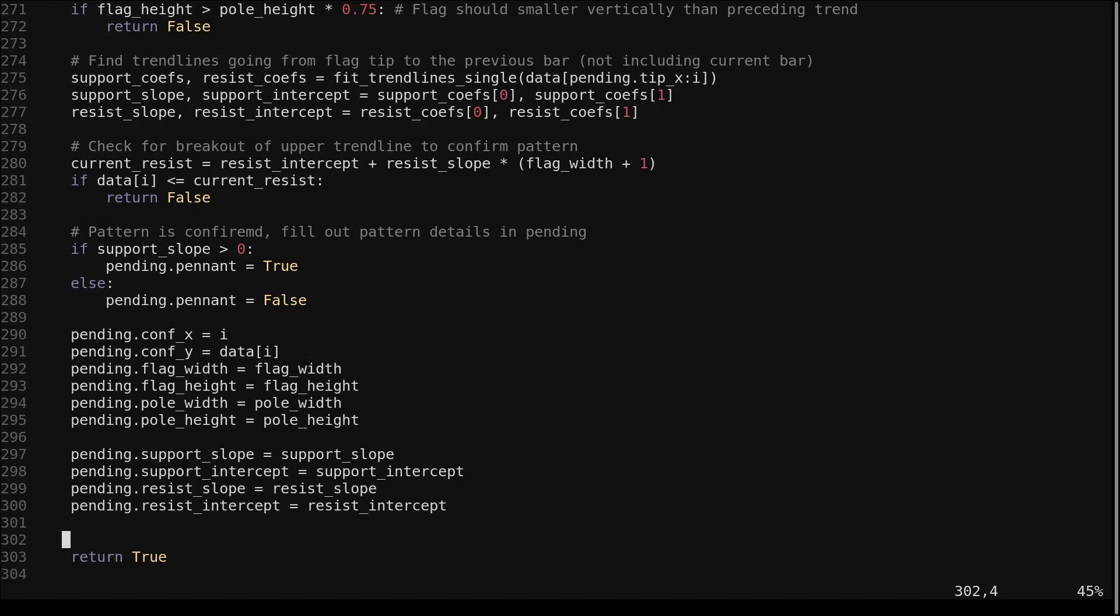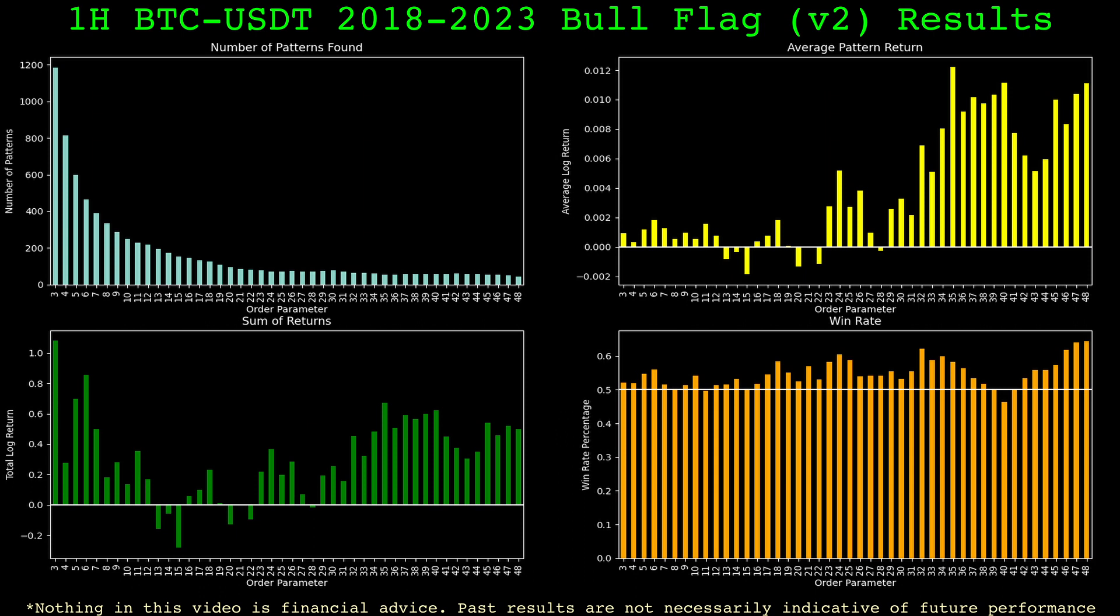I purposely was more lenient in the construction of the second version to get more patterns and better test the idea of a brief interruption in a trend as a trade entry. Again, using hourly bitcoin data as our test set, we get these results for the bull flags found. The number of patterns found monotonically scales with the order parameter in this version, which is a nice property. The bull flags in this version work on nearly every parameter value, favoring the larger values. This is in contrast to the results with the previous version. The win rate is above 50% on most values as well. The average pattern return is also quite high on many values.